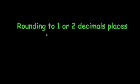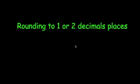In this video, we're going to look at how to round numbers to one or two decimal places. If you're rounding a number to one decimal place, that means you just want one number after the decimal point. If you're rounding to two decimal places, you want two digits after the decimal point. Let's have a look at how to do that now.